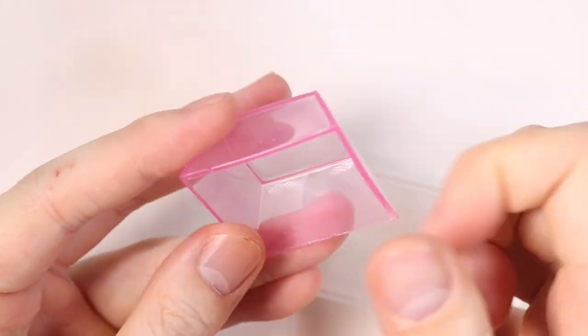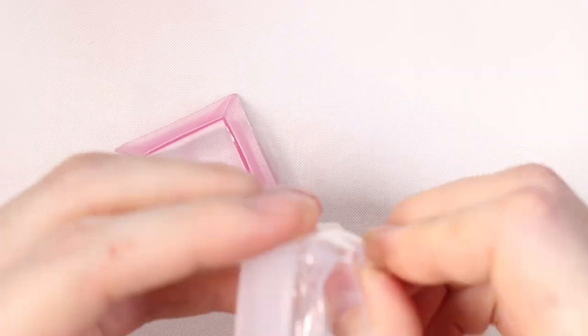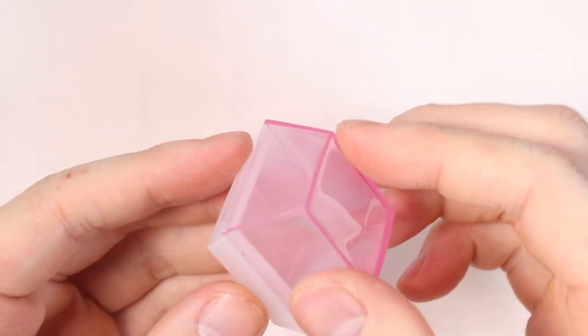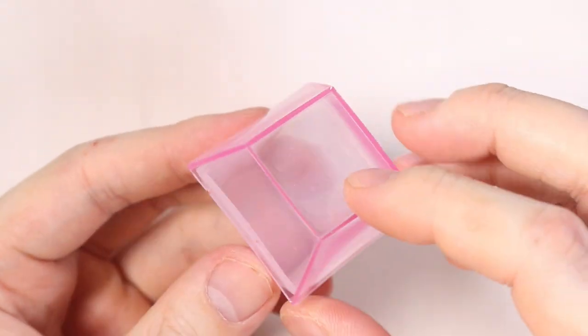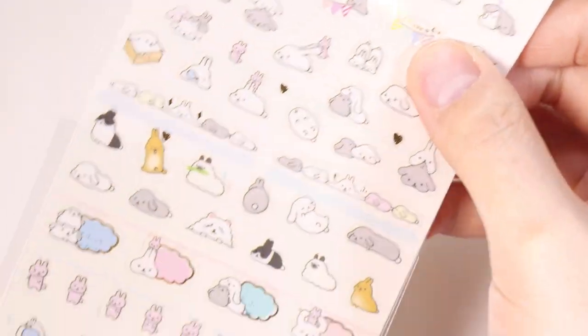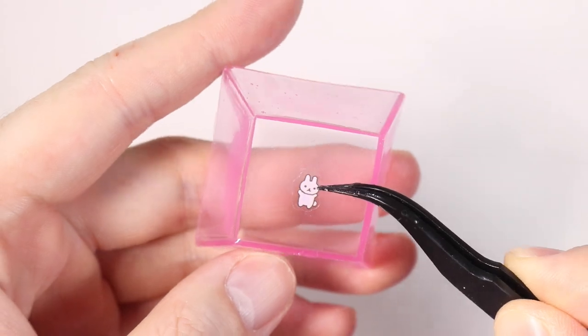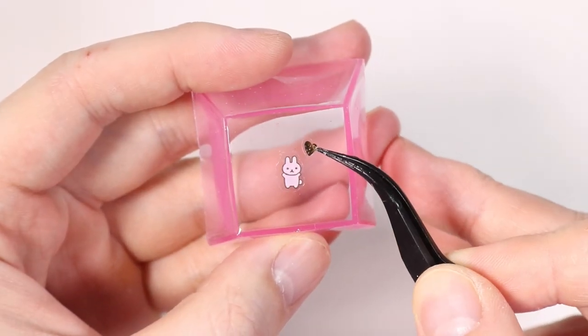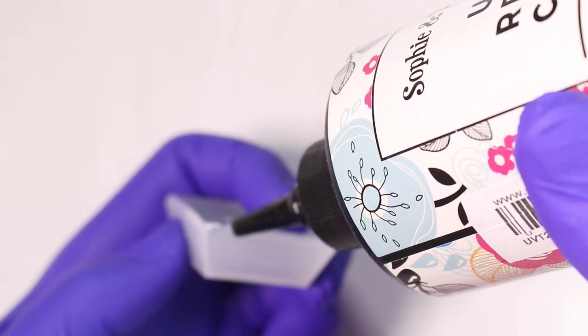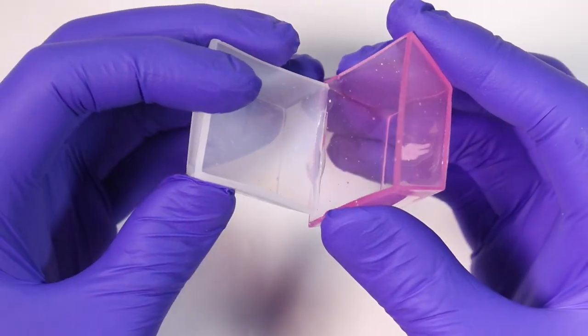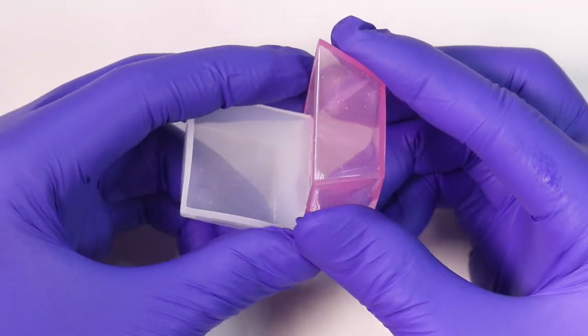And they came out so smooth and nice. I really like this mold a lot. This is how it looks together and it's so cute. I decided to decorate it with some bunny stickers, placing a bunny in the middle and a little heart. We're going to place some UV resin along one corner and cure it so it looks like the box is partially open.